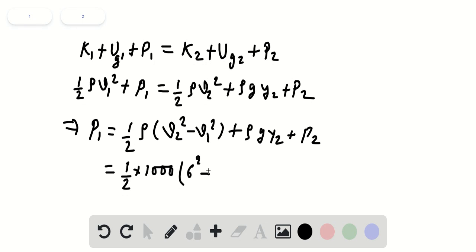So 6 squared minus 3.84 meter per second squared, V1 squared that we calculated, plus another rho, which is 1,000 kg per meter cubed for water. And G is 9.8 meter per second squared times 8 plus P1 was the atmospheric pressure, 1.01 times 10 to the 5.